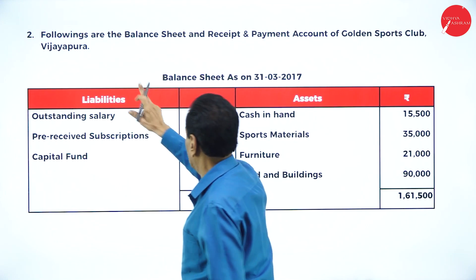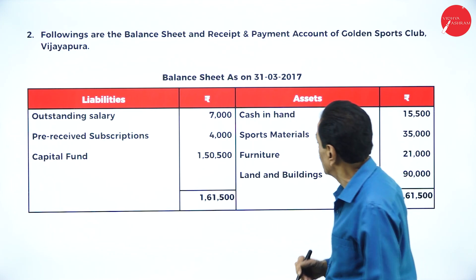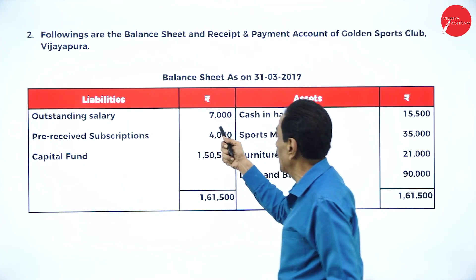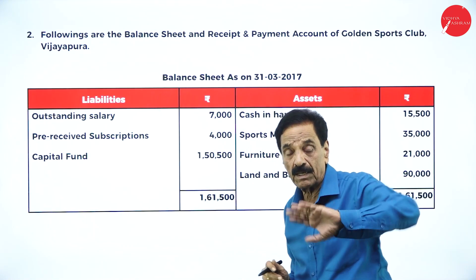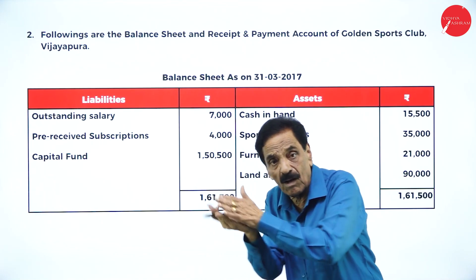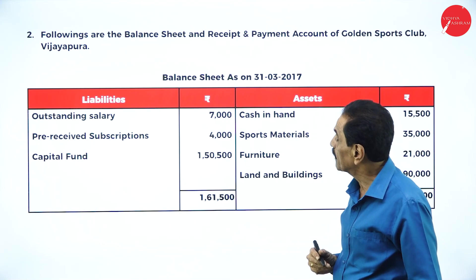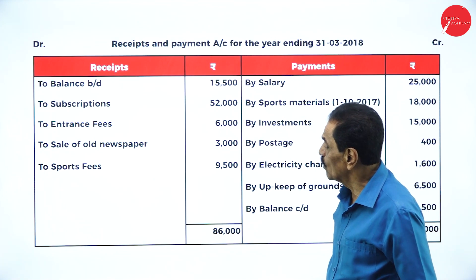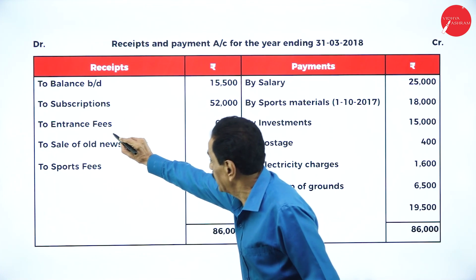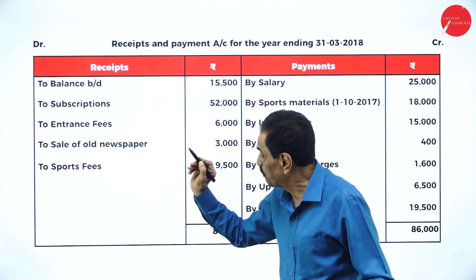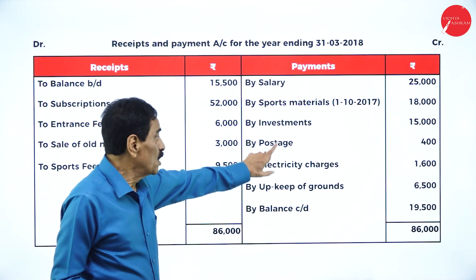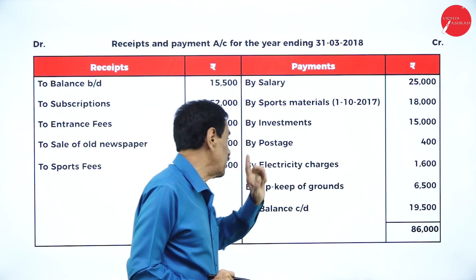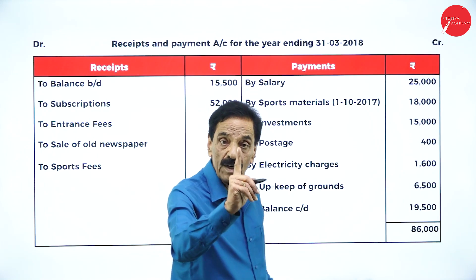We have the balance sheet and receipt-payment account of the Sports Club, Vijayapura, as on 31/3/2007. Cash and land are assets, sports material, furniture, land and building are assets. Outstanding salary is not yet paid. Subscription received belonging to next year is a liability. Subscription is income, entrance fees is income, sale of old newspapers is income, sports fees is income, salary is expenditure, postage is expenditure, electricity charges is expenditure, upkeep of ground is expenditure, and investment is an asset.